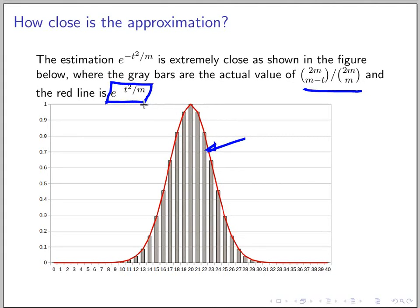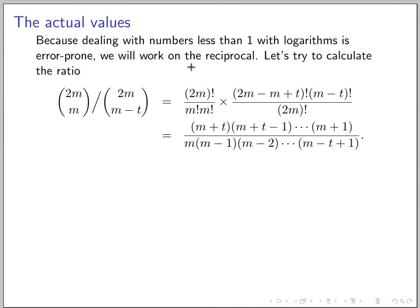This bound is pretty close if you look at the graph — really, really close. We get a bound that looks like this, but not as close, with our elementary tools. As we did before, dealing with numbers less than one with logarithms is hard because you get negative numbers and everything gets messy. So we work on the reciprocal.